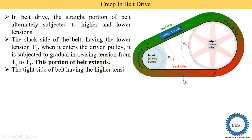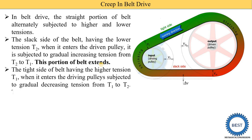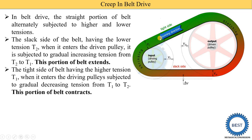The opposite thing takes place when the belt passes from the tight side to the slack side. The tight side of the belt has higher tension T1. When the belt enters the driving pulley, it is subjected to gradually decreasing tension from T1 to T2, so this portion of the belt contracts, or we can say it shrinks.